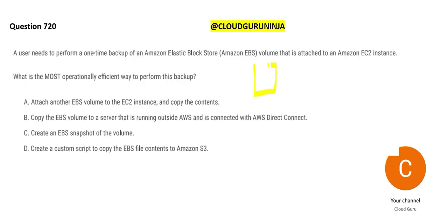There is one EC2 instance and a block store attached. What you have to do is take a backup of this EBS in a very efficient way. Option A says attach another volume and copy the contents — attach one more volume here and copy the content. So the first thing: will it work? Yes, it will work, but is it very efficient? The number of steps to copy is high.